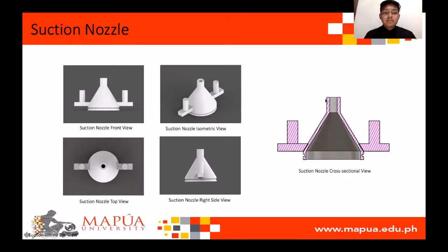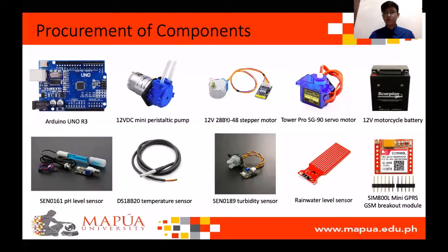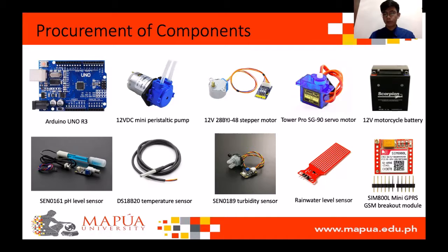To continue Chapter 4, here is Mr. Valenzuela. My name is Rodin Valenzuela, and I am here for the continuation of Chapter 4. Procurement of components — the electronic components used for the robot include sensors, motors, pump, and microcontroller. For producing the circuit board, the circuit board connects all the electronic components. Below is the schematic diagram for the circuit board.